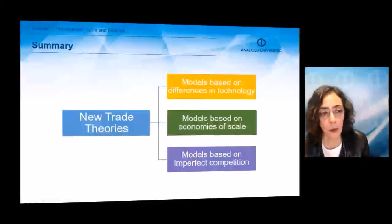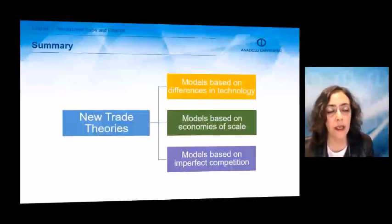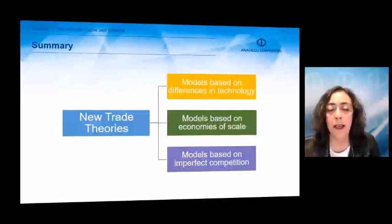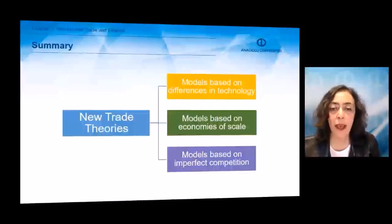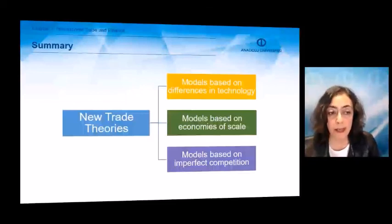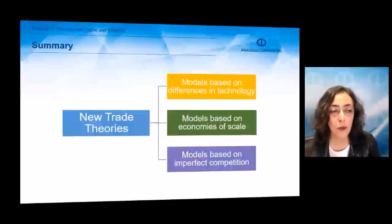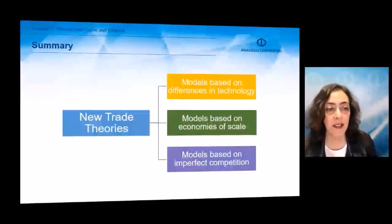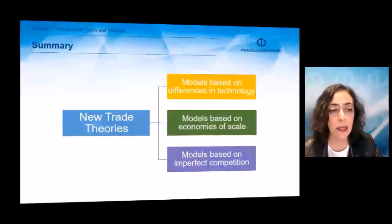The second group under international trade theory is the new trade theories. Here we have models: the first group is based on differences in technology, the second group is based on economies of scale, and the third group is based on imperfect competition. Today, economists are still trying to add new models and hypotheses to the international trade theory, so it is an evolving part of economics.